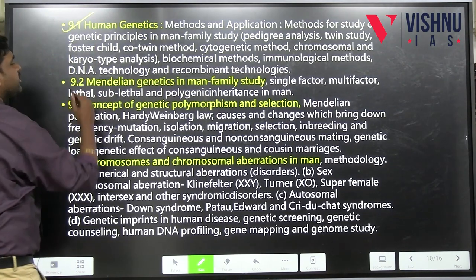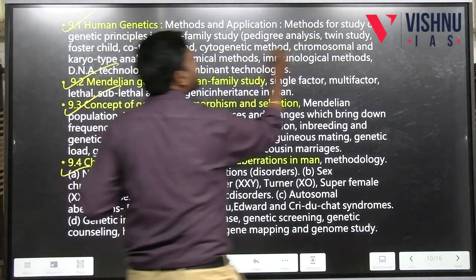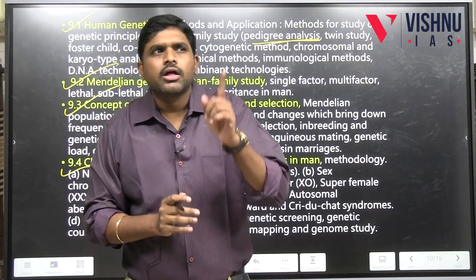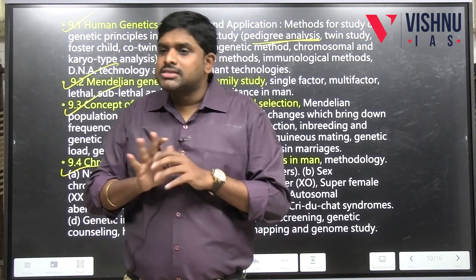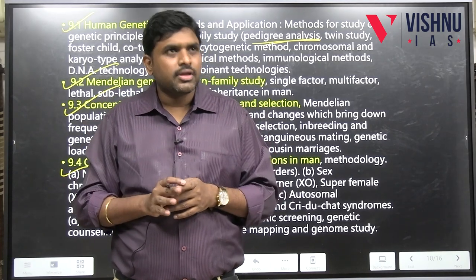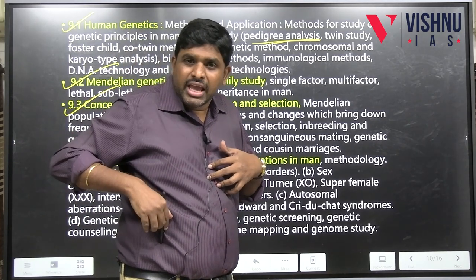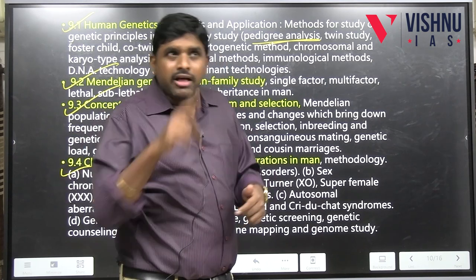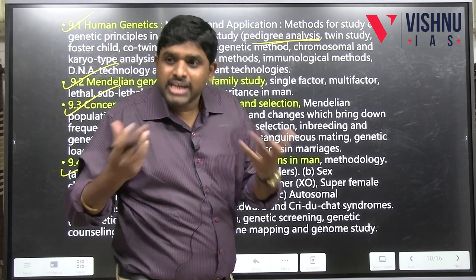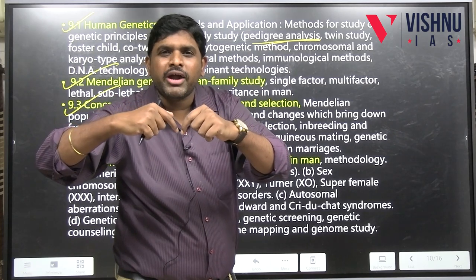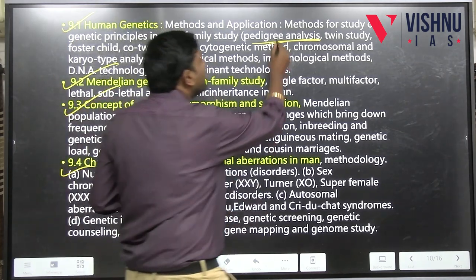Unit 9: human genetics. Unit 9.1 covers pedigree analysis — if father has a genetic disease and mother does not, what is the probability of the child getting the disease? This is mathematics, not biology. Carrier means the disease-causing gene is present but not expressing. If both parents are carriers and marry, the child may suffer — that is studied in pedigree analysis.